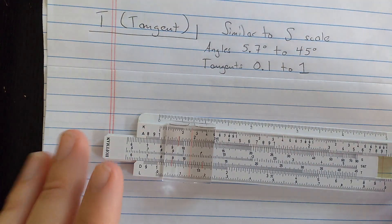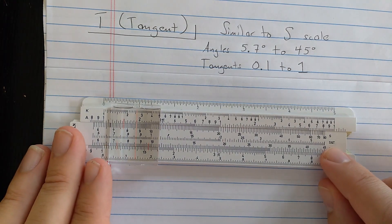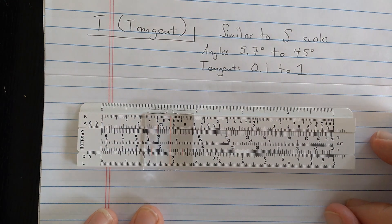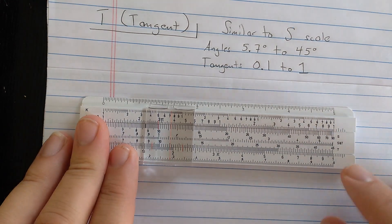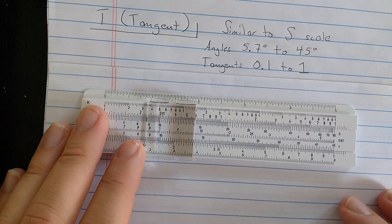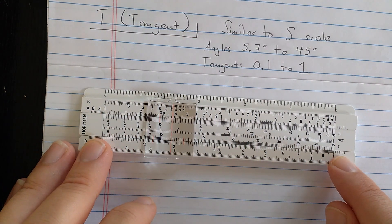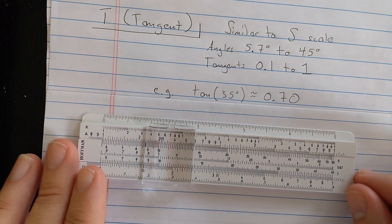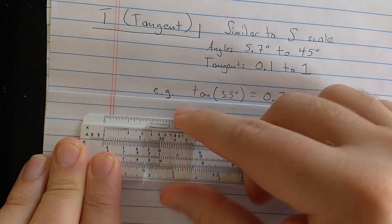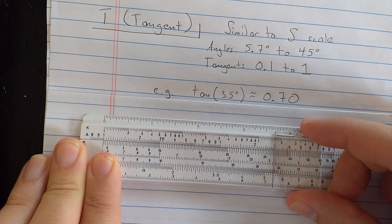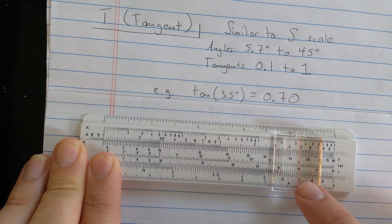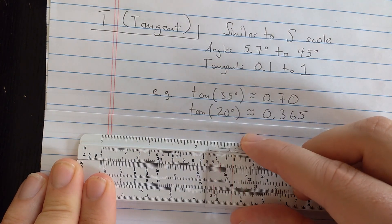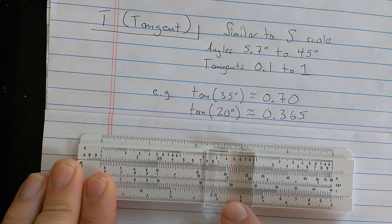The T scale is for tangents. I'm not going to explain the S and T, but that's for sines and tangents of small angles. You can read about that in your manual if your slide rule has an S and T scale. Some of the basic slide rules do not have that. And you can see T also starts at about angle 5.7 degrees, but it only goes up to 45 degrees. But it works generally in the same way as the S scale. So if I want tangent of 35 degrees, I find 35 on T. And then I read the tangent here, 0.7. If I want tangent of 20 degrees, I find 20 degrees. Read the tangent here, 0.365.